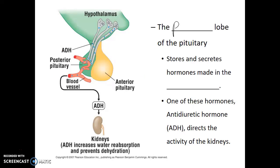The posterior lobe of the pituitary stores and secretes hormones that were made in the hypothalamus, meaning the posterior lobe doesn't really make hormones on its own. Instead, it releases the hormones that had been made by the hypothalamus. ADH, or antidiuretic hormone, a hormone which controls the activity of the kidneys, is an example of one of these hormones released by the posterior lobe of the pituitary.